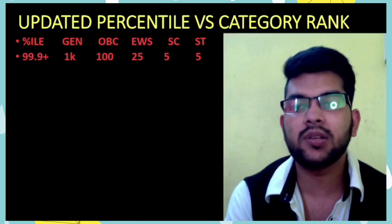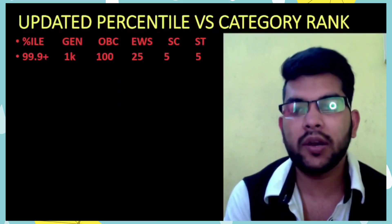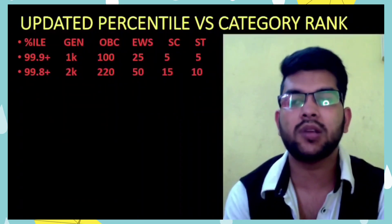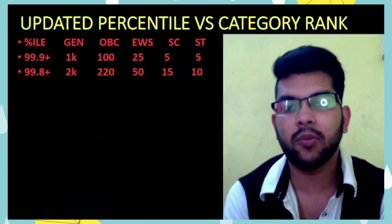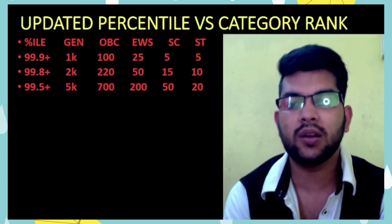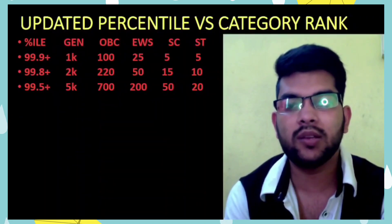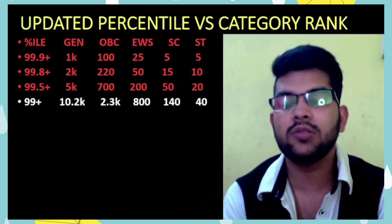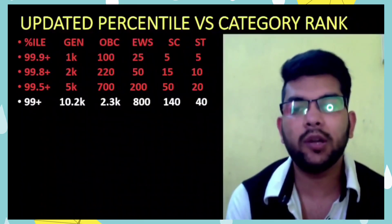For 99.9+ percentile, your rank will be under 1000 for General, under 100 for OBC, under 25 for EWS, and very easily under 5 for SC/ST. For 99.8+ percentile, General rank under 2000, OBC under 220, EWS under 50, SC under 15, ST under 10. For 99.5 percentile, General rank under 5000, OBC under 700, EWS under 200, SC under 50, ST under 20. For 99+ percentile, General under 10,200, OBC under 2,300, EWS under 800, SC under 140, ST under 40.